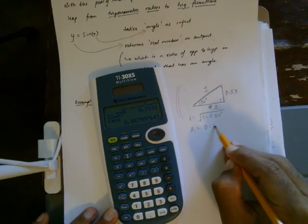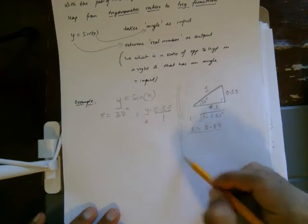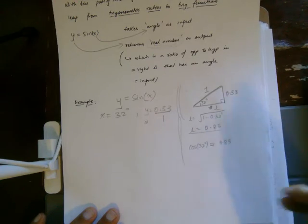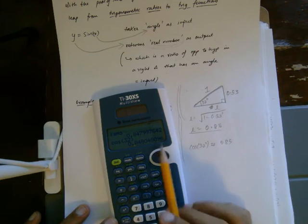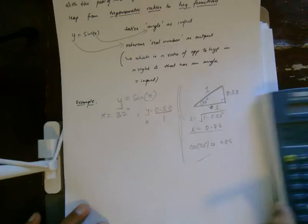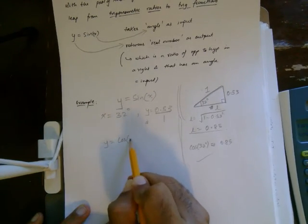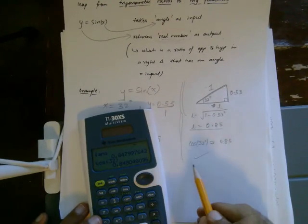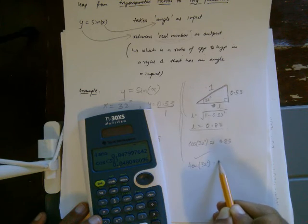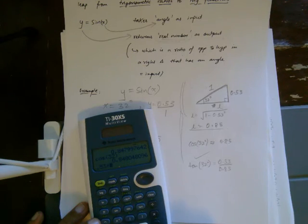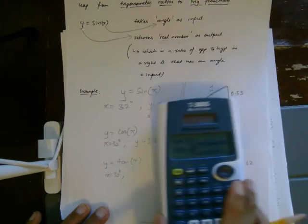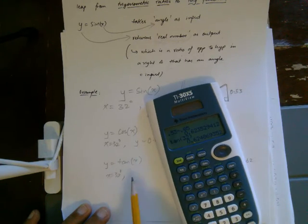That comes out to roughly 0.85. To verify: if this is correct, then cosine of 32 should be approximately 0.85. Checking the calculator, cosine of 32 is 0.848 — which confirms it. Similarly, tangent should be 0.53 over 0.85, which is roughly 0.62. Plugging into y equals tan x with x equals 32 degrees, we get approximately 0.62 as well.